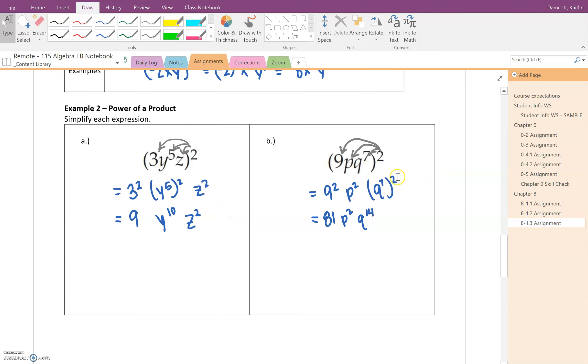Alright, so as a review, just going over one more time, when you have a product, so something that's multiplied together, so in this case 3 times y to the 5th times z, and you raise that product to a power, you need to distribute the power to each of the factors. And then you have to look, perhaps you might have a power raised to a power, so like here with the y to the 5th to the 2nd. If you are raising a power to a power, then you have to remember that you need to multiply the exponents.